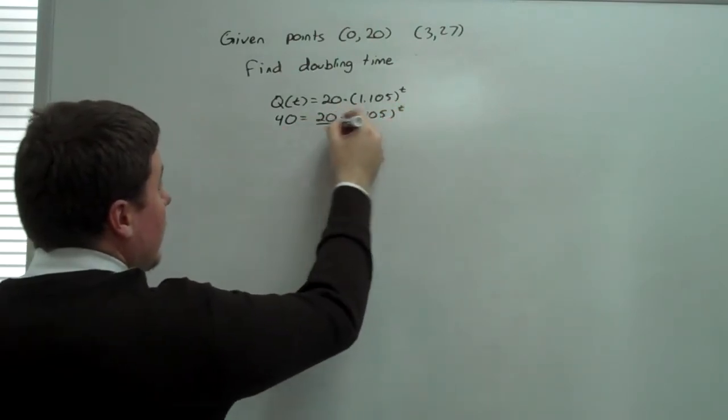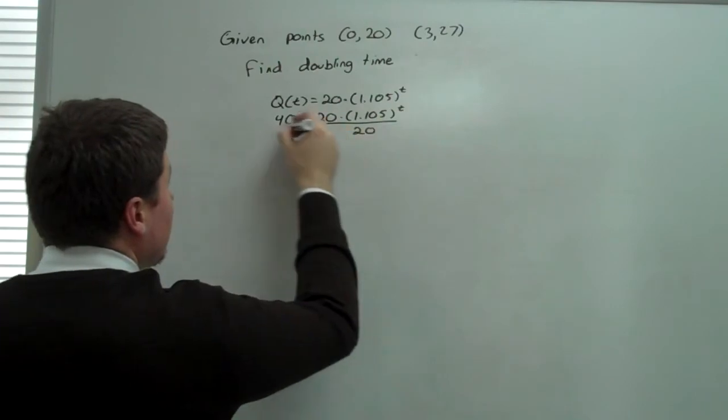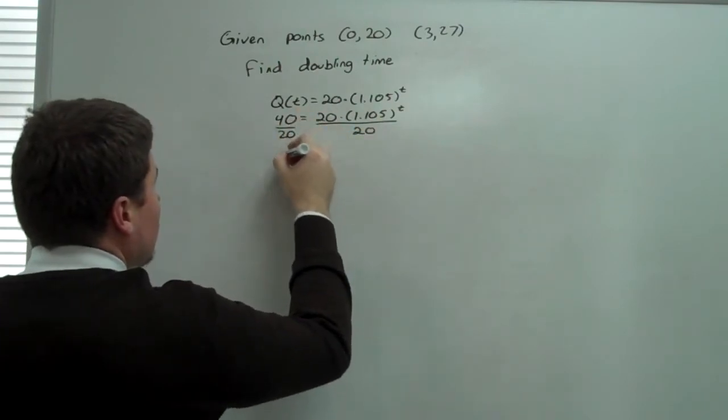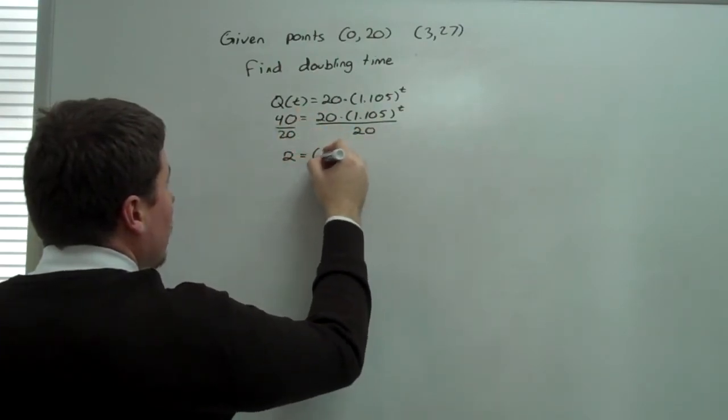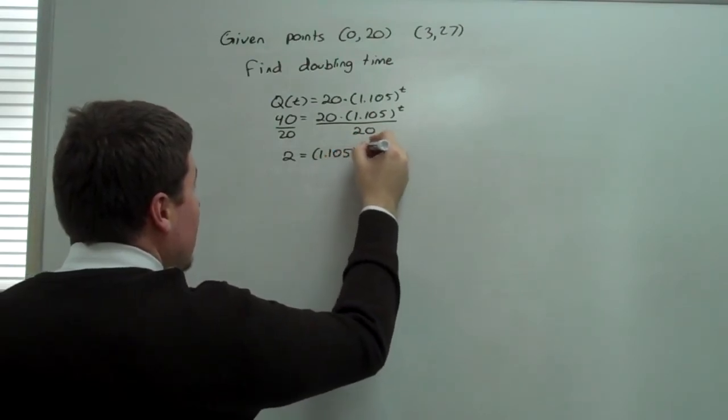Divide by 20 on both sides. 2 is going to equal 1.105 to the t.